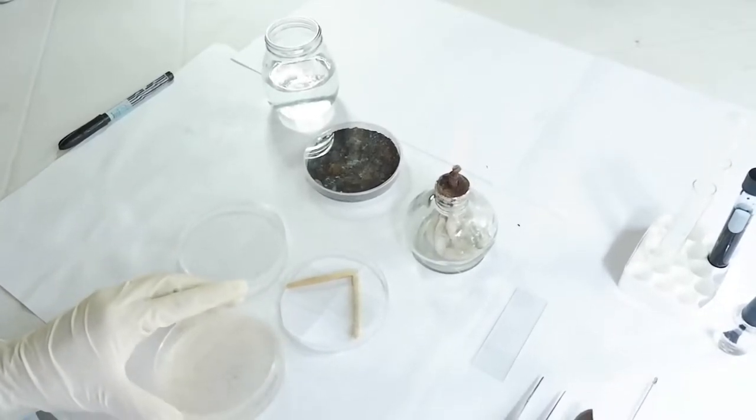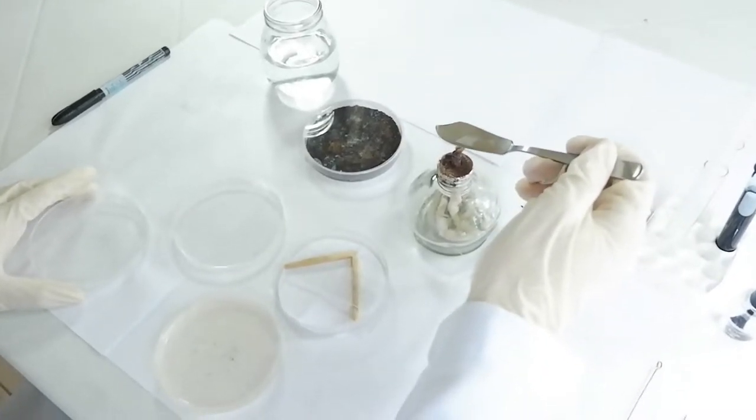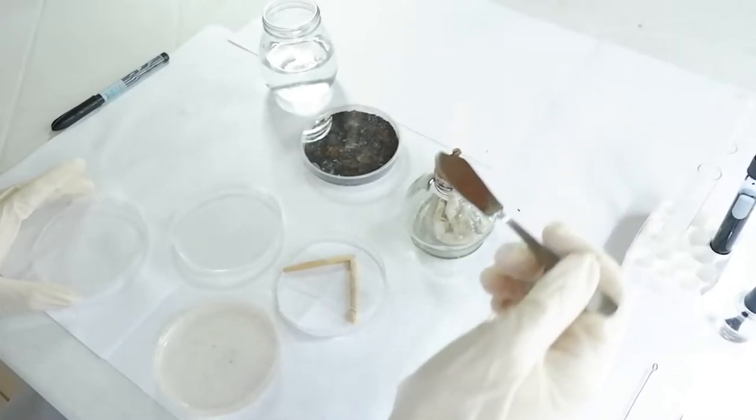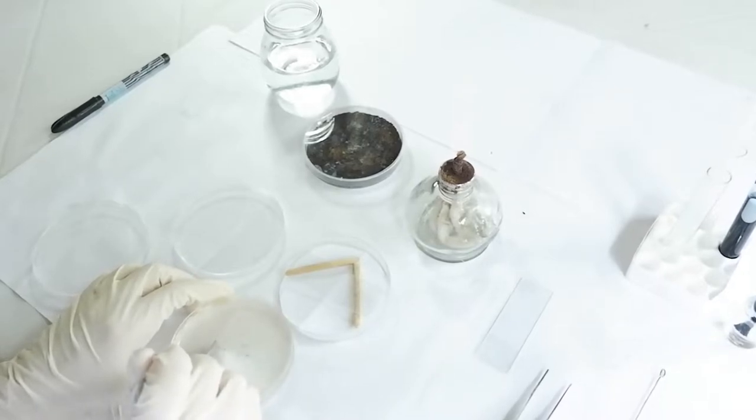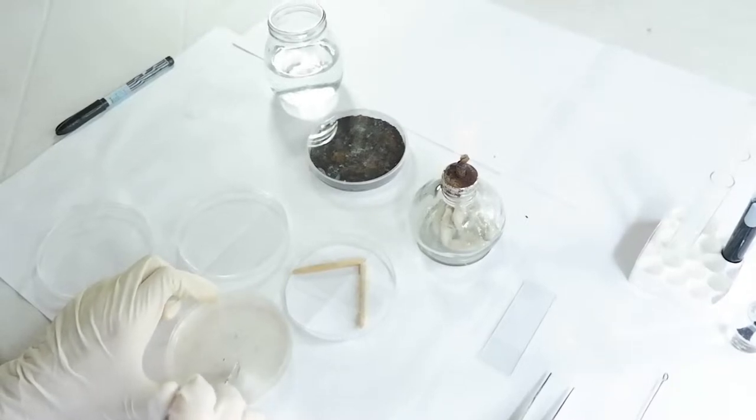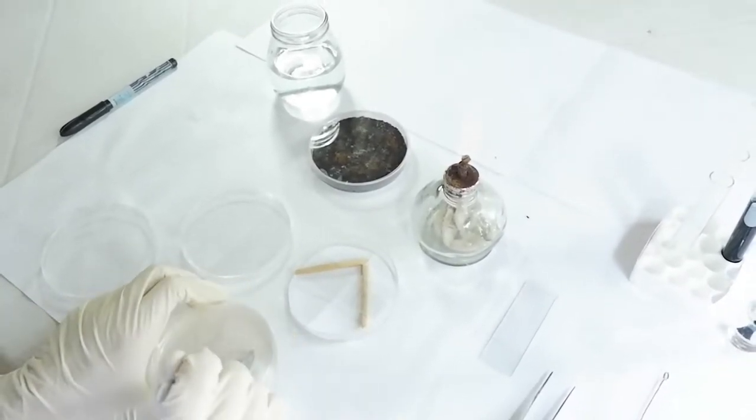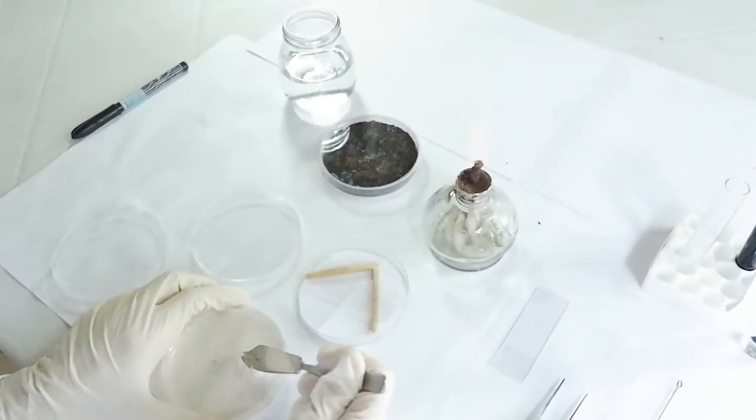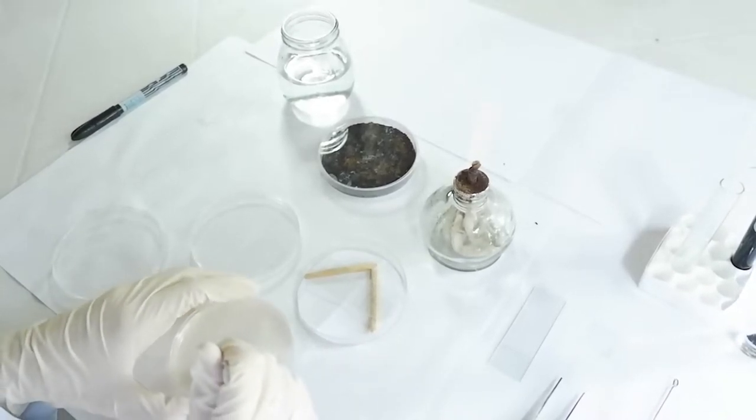Now using a sterile scalpel, we cut a sabrodextrose agar or SAB into cubes with a size of 1.5 cm by 1.5 cm. We transfer this one SAB cube on the center of our sterile slide inside the MC set.